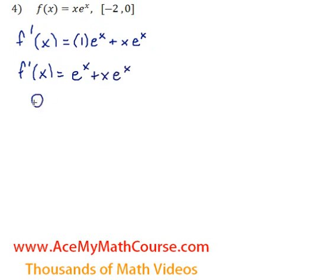Now we're setting it equal to zero and we want to solve for x. So I can factor out an e to the x. We're going to have 1 plus x, right? Because e to the x divided by e to the x is just 1, and x times e to the x divided by e to the x is just x.